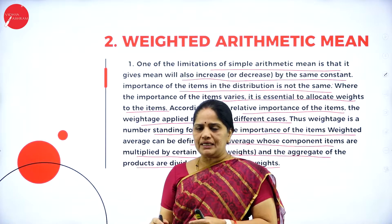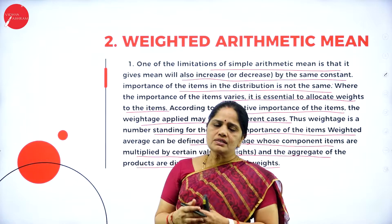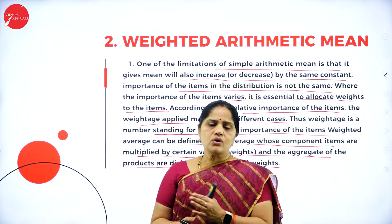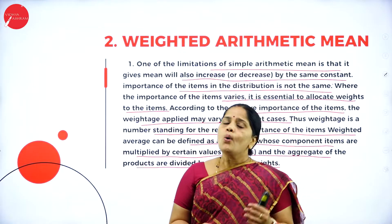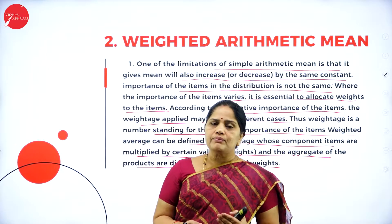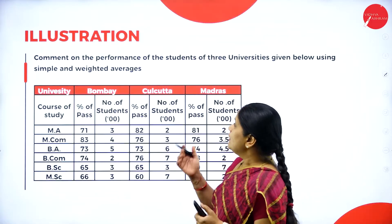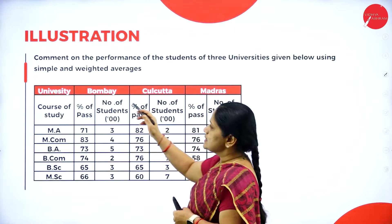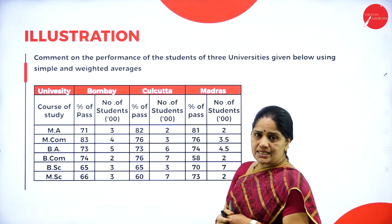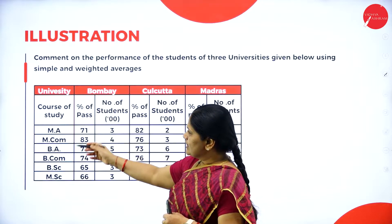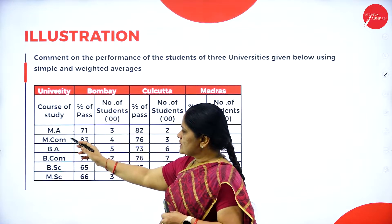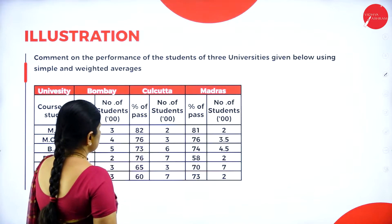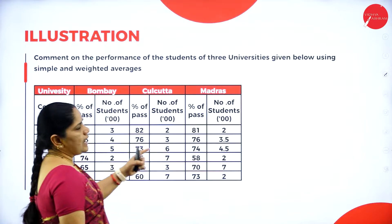With the help of weighted mean, we are able to assess what is more important. In simple arithmetic mean, no importance is given to any of the values, whereas in weighted mean we give importance in the form of weights. Now let us see one illustration: comment on the performance of students of three universities using simple and weighted average. We have various universities with courses MA, MCom, MBA, BA, BCom, BSc, MSc, and percentage of passes.